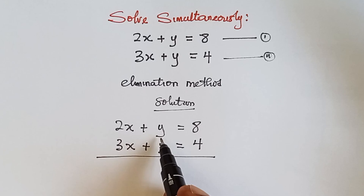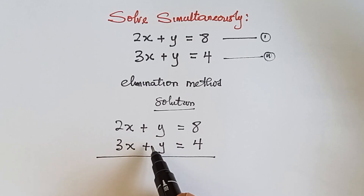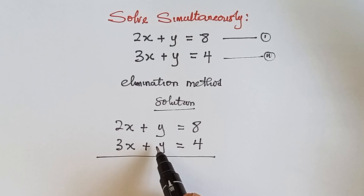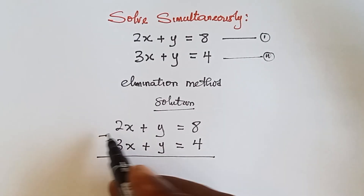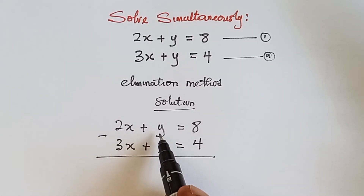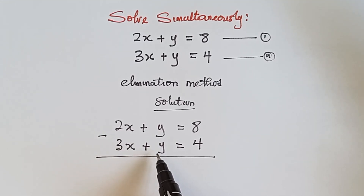Y here and y in the second equation are having the same coefficients. Once the coefficient of one of the variables are equal, we can eliminate that variable. Since the coefficient of y in both equations is one, we eliminate y by subtraction, because plus y minus plus y gives zero — that means it has been eliminated.